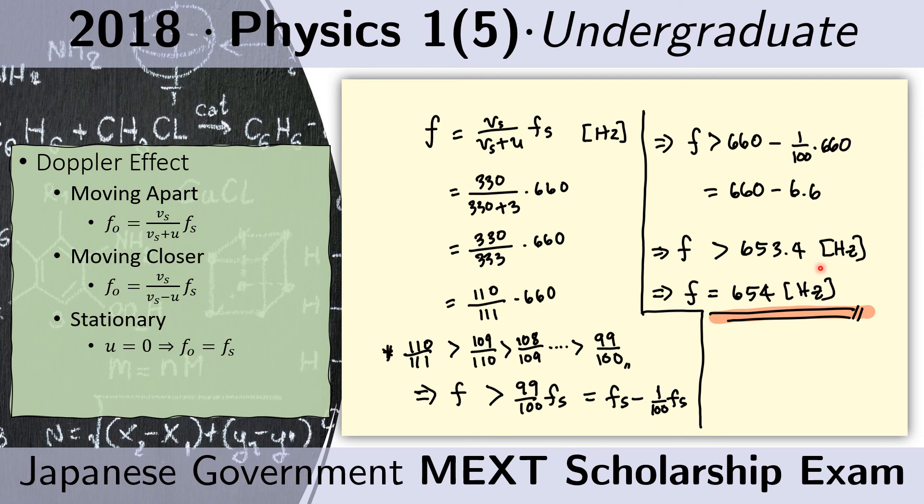We can eliminate the other choices that are greater than 653.4 because they are also greater than 660. We know the new frequency must be less than 660 because it's a plus here, meaning we have a denominator greater than the numerator. So the resulting fraction must be smaller than 660. This is the only possible answer among the choices.